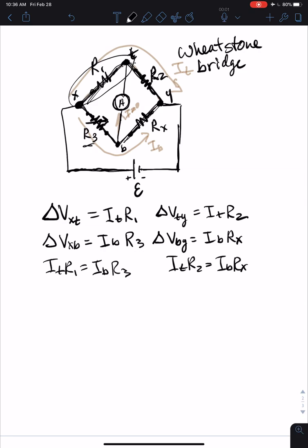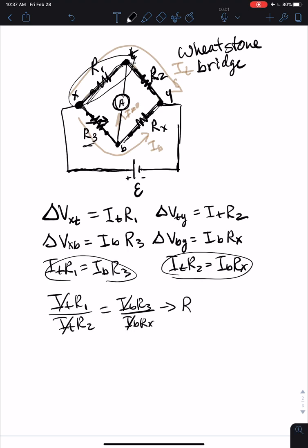And there are a bunch of ways to do this, but we can take Itop R1 over Itop R2 equals Ibottom R3, we can divide by Ibottom Rx. And I think you can see why I did that. The Itops and Ibottoms cancel and we can cross multiply and get R1 times Rx equals R2 times R3.